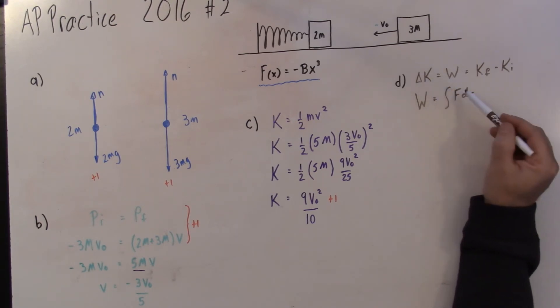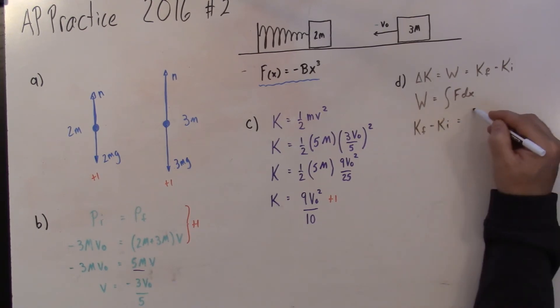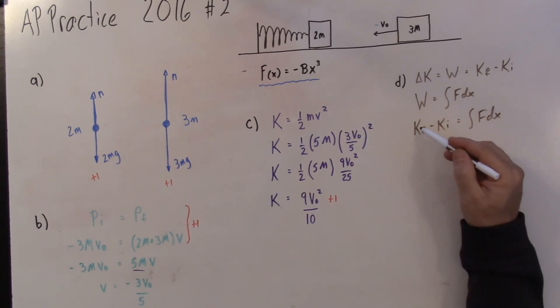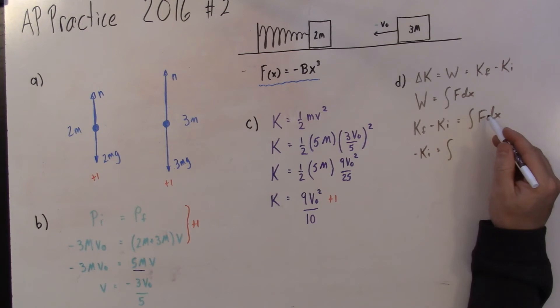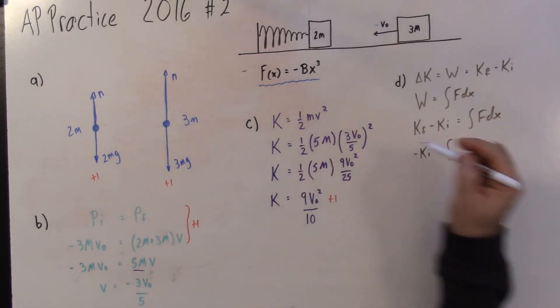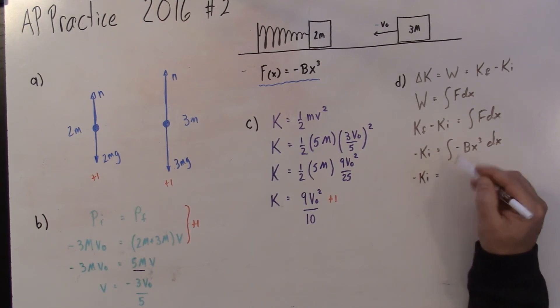So if the change in kinetic energy is the work, and the work is the anti-derivative of Fdx, we can set those equal. The final kinetic energy is zero. So we have negative initial kinetic energy equals the anti-derivative of this force function. The function is negative Bx cubed dx. We have to apply the anti-derivative algorithm. It's bounded from the initial position to the final position, from x1 to x2.